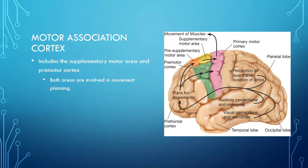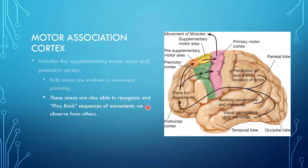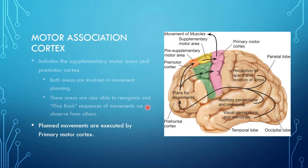Two of the primary areas involved in movement planning are the supplementary motor area and the premotor cortex. These are involved in planning movement, and in particular they are able to recognize and help us learn movements from others — they can play back sequences of movements. These movements end up being executed by the primary motor cortex. There are some fixed sequences and patterns that the primary motor cortex is able to execute, while true planning happens in these pre-motor areas.